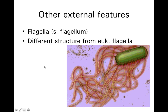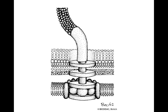Bacteria may also have flagella. If we just have one, we call it a flagellum; if we have two or more, they are flagella. The structure of prokaryotic flagella is very different from what we see in eukaryotic flagella. In eukaryotic flagella, predominantly microtubules drive those flagella, and the microtubules are cross-linked by motor proteins. What we see in bacterial flagella is very different.